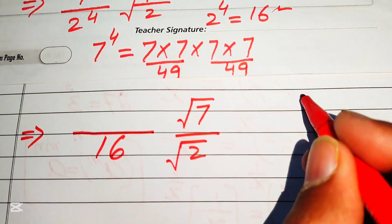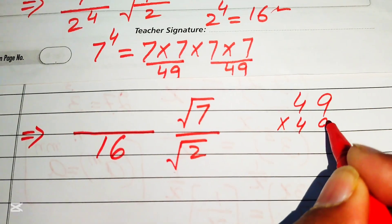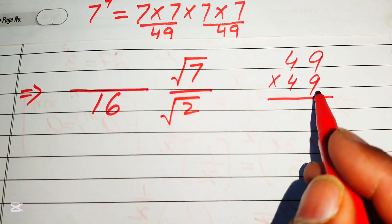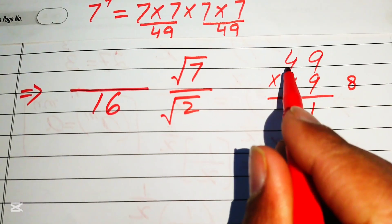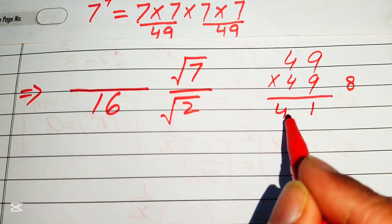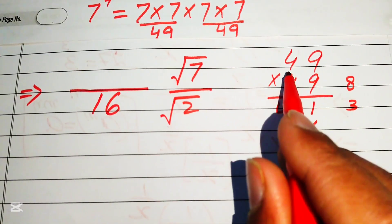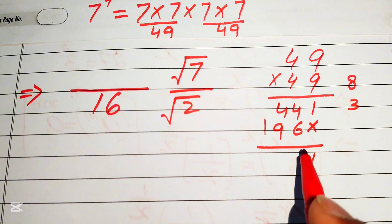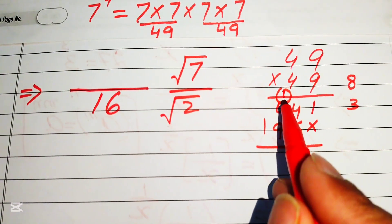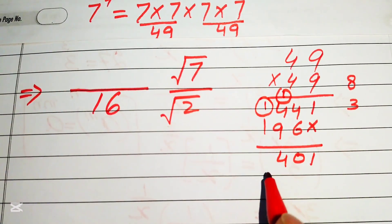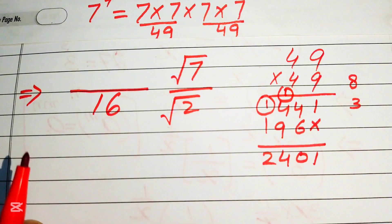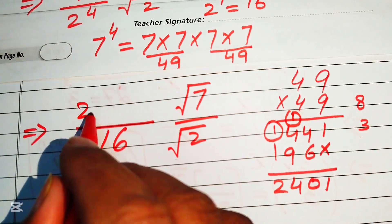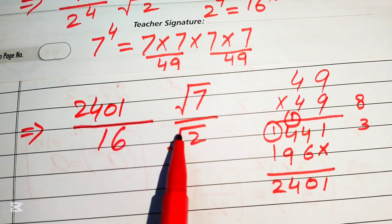To find 7^4 we multiply 49 by 49 using traditional long multiplication. 9 nines are 81, write 1 carry 8; 9 fours are 36 plus 8 is 44; 4 nines are 36, write 6 carry 3; 4 fours are 16 plus 3 is 19. Combining all partial products, 7 to the power of 4 equals 2401.